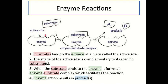An enzyme only binds with one substrate because only one substrate has the correct shape to fit into the enzyme's active site — this is why we describe enzymes as being specific. Once the substrate binds to the active site, it forms something called an enzyme-substrate complex, and this facilitates the reaction that then takes place. Finally, the activity of the enzyme results in products being produced and released from the enzyme's active site. Once the product leaves, the enzyme returns to its exact same shape — it remains unchanged — and is ready to bind another substrate and repeat the reaction again.